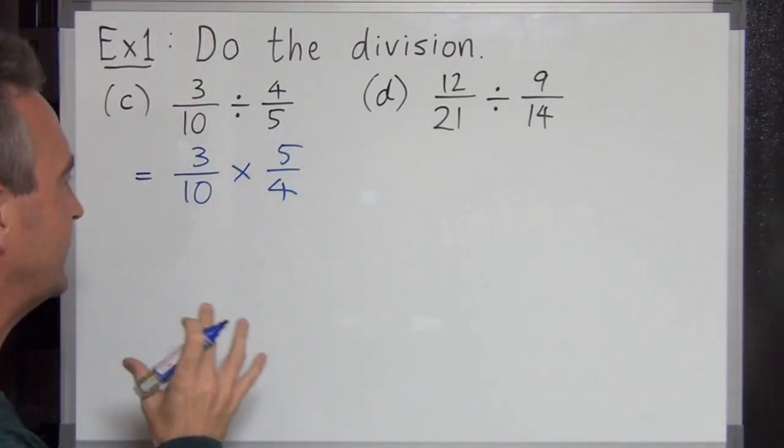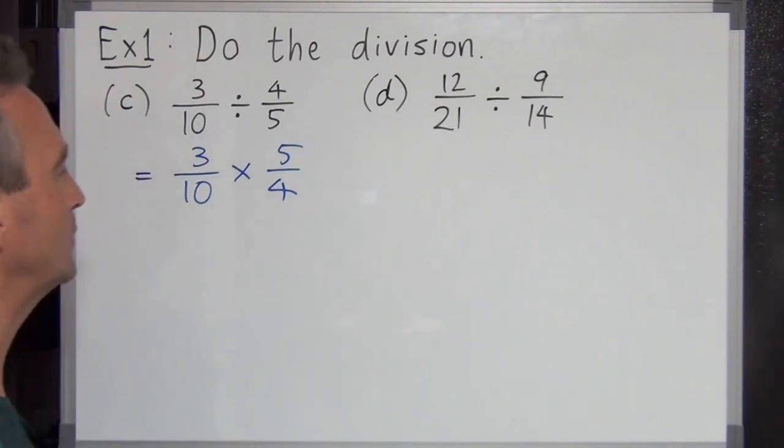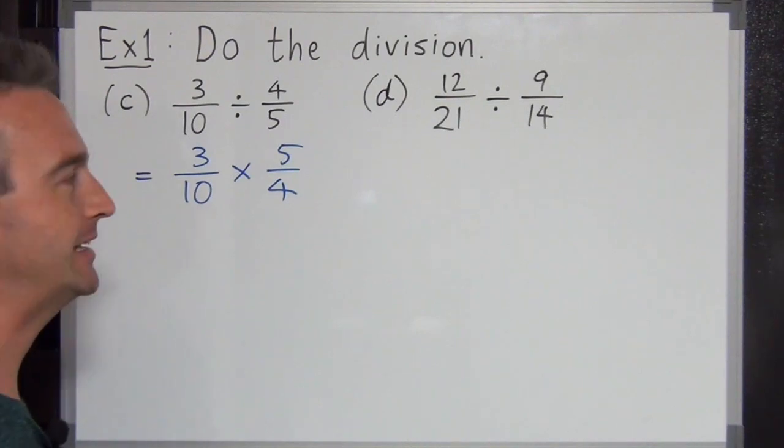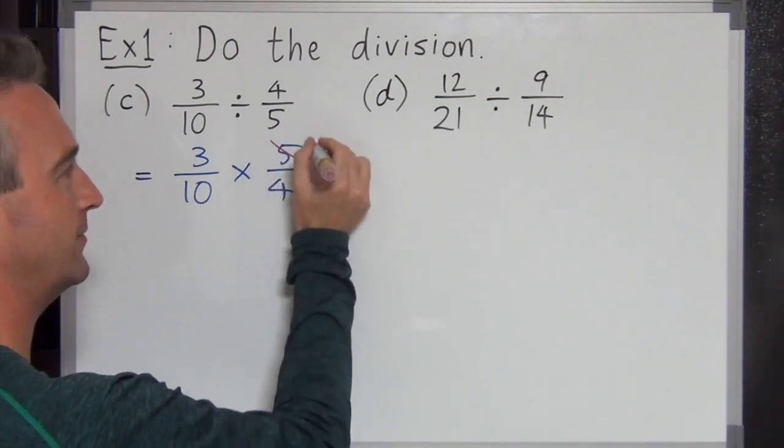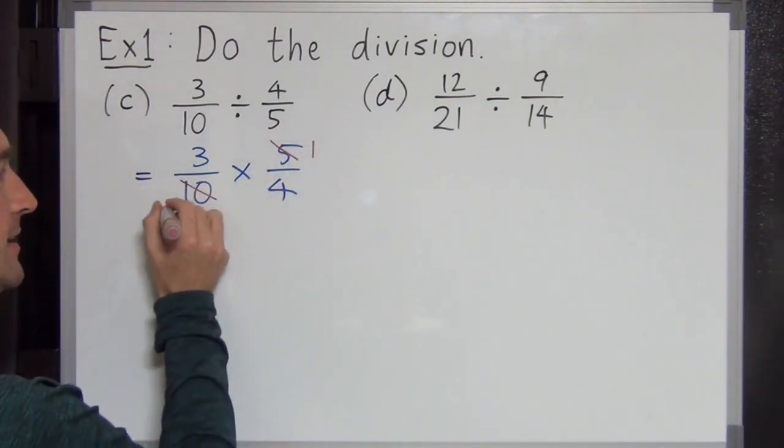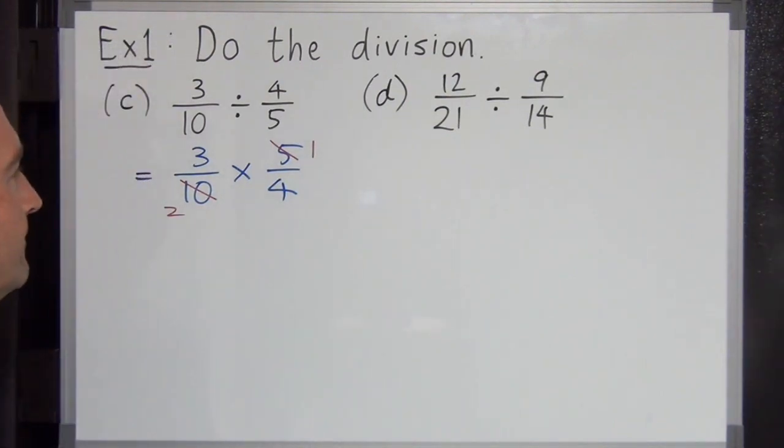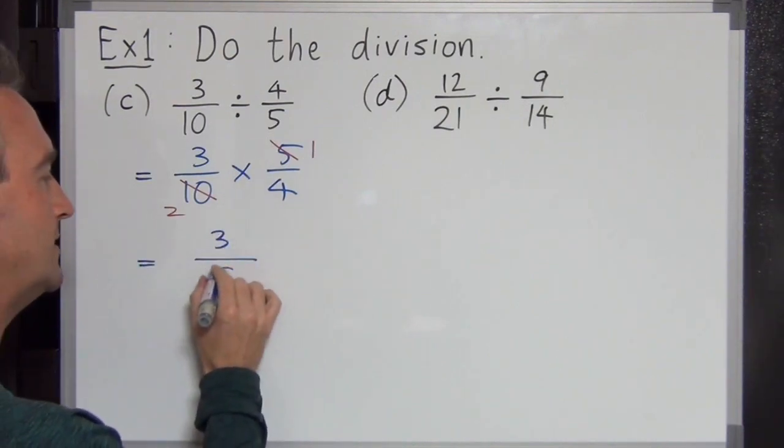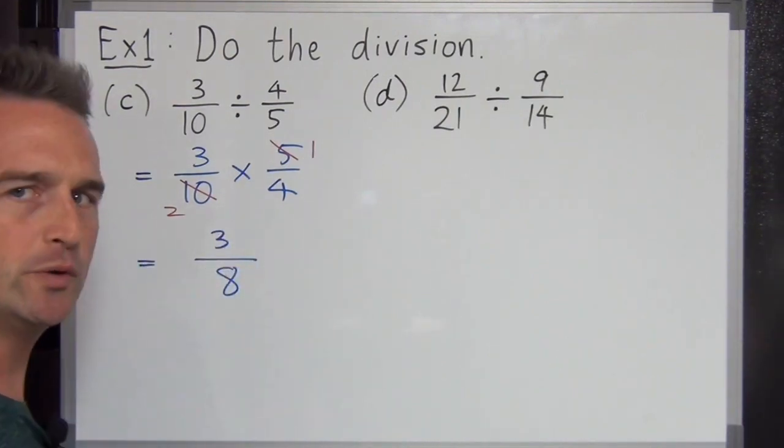Quick check. Can we cancel anything? Yes we can. We've got 5 and 10. The 5 and the 10 can cancel. So 5 goes into 5 once. 5 goes into 10 twice as both of those numbers are divisible by 5. Pushing on, 3 times 1 is 3 and on the bottom 2 times 4 is 8. Answer 3 over 8.